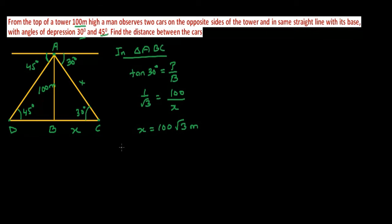Now moving to the next triangle. In triangle ABD, same. We do not have any role of hypotenuse, that is why we are going to use tan. Tan 45 degrees equals perpendicular by base.